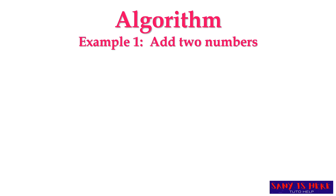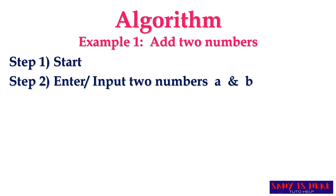Now I want to explain a very basic algorithm - that is addition of two numbers. Every algorithm starts with the step 'Start'. To add two numbers, we need two numbers. I am taking two numbers as A and B so that I can put any value in A and any value in B. Just think - why am I not taking 10 and 5, or 15 and 20?